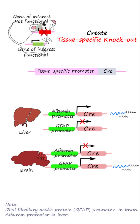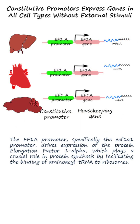To knock out the gene only in a specific tissue, expression of Cre is limited to that tissue by using a tissue-specific promoter to express Cre instead of a constitutive promoter. Constitutive promoters express genes in all cell types continuously, which is required for housekeeping genes that produce RNA and proteins for basic cellular functions.